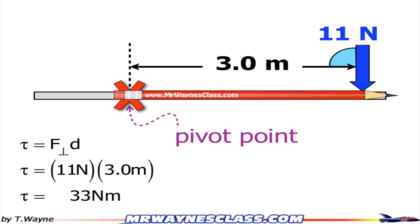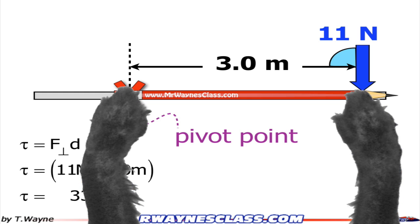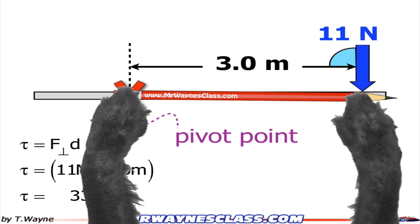So Sophie's going to take one paw and put it right there at the pivot point, and the other paw is going to be on the pencil where the force is applied, and she's going to move the pencil in the direction of the force.